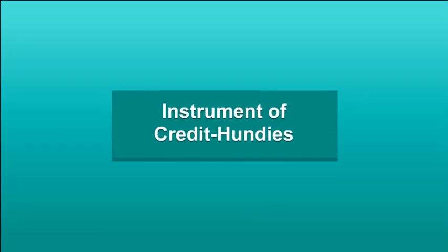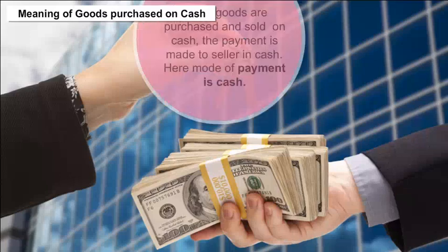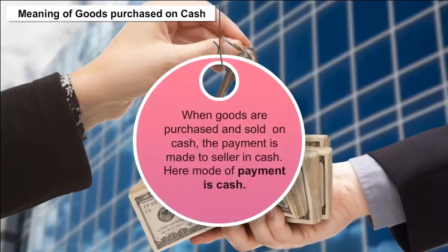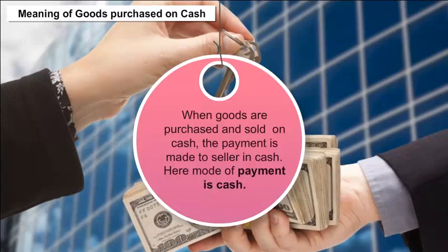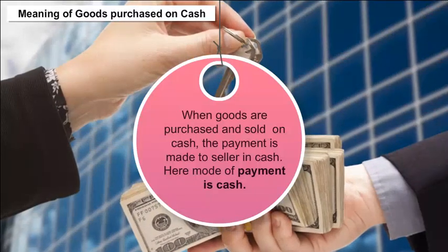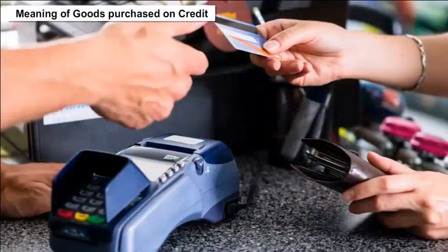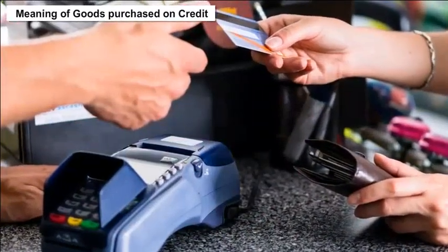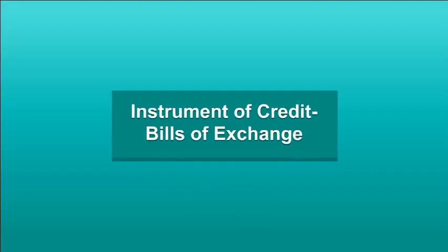Instrument of Credit — Hundis. When goods are purchased and sold on cash, the payment is made to the seller in cash; the mode of payment is cash. However, when goods are bought on credit, instruments of credit such as bills of exchange come into use.